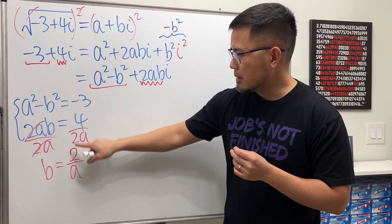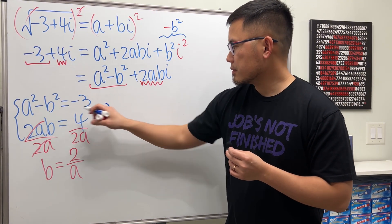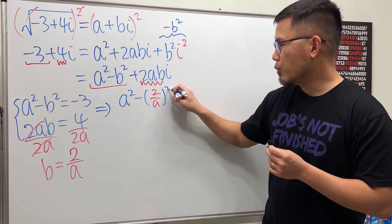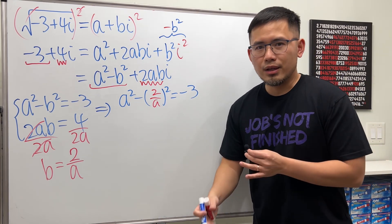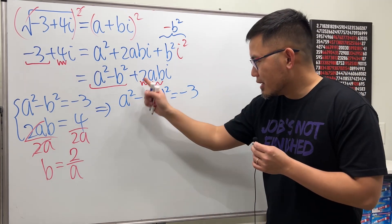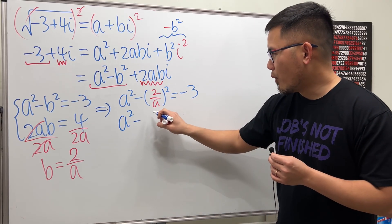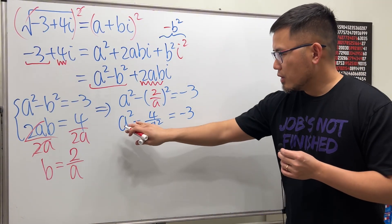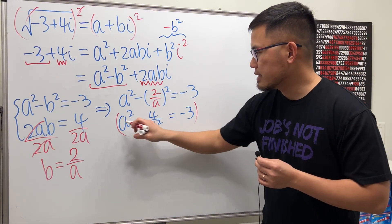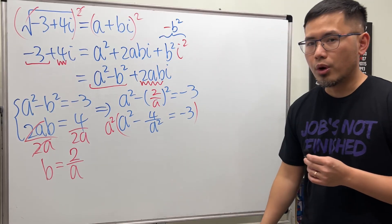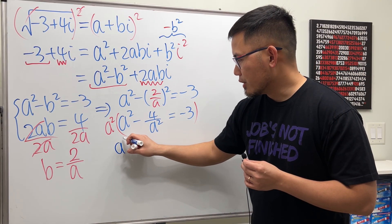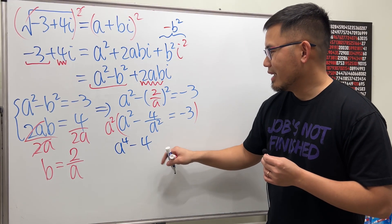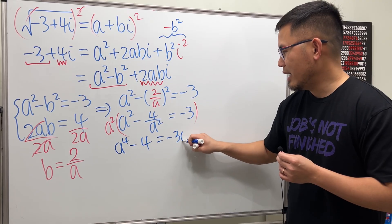Substituting b equals 2 over a into the first equation: a squared minus (2 over a) squared equals negative 3, which gives a squared minus 4 over a squared equals negative 3. Multiply through by a squared to eliminate the fraction: a to the fourth minus 4 equals negative 3a squared.